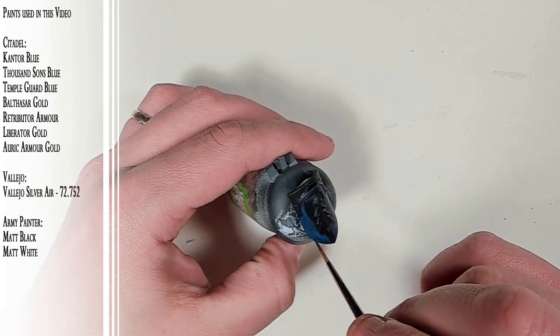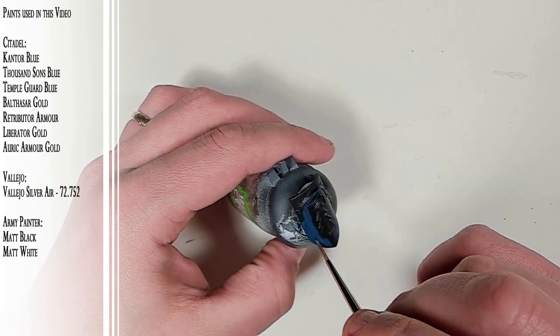We are starting again with Kantor Blue. But we are not base coating the entire shield. We are just finding our shadow recesses. Then we are wet blending a little bit of Thousand Suns Blue mixed with Kantor Blue into that. And now we are also mixing in a little bit of Temple Guard Blue into that wet blue paint we already have.